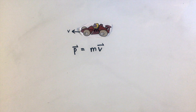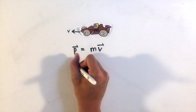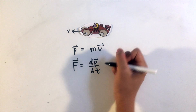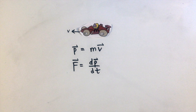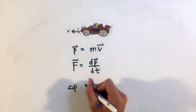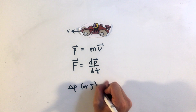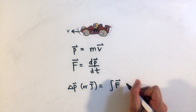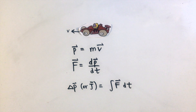In addition, we also learned that force can be defined as the rate of change in momentum, which we'll now write as the derivative of momentum with respect to time. Finally, we learned that impulse, or change in momentum, was the product of force over a period of time, which we can now account for with changing forces using the integral of force with respect to time.